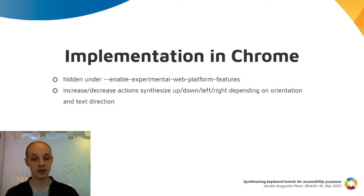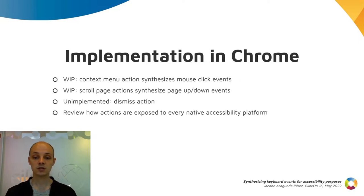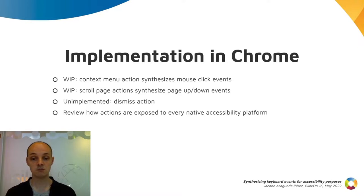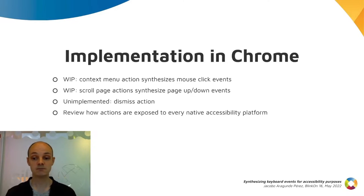This is hidden under a flag. We are currently working on the context menu and scroll page actions to make them synthesize the corresponding mouse or keyboard events. There are more kinds of actions that we haven't implemented in Chrome yet, but we might consider the adoption of actions APIs before going for them. Finally, we are reviewing the different platform accessibility implementations we host in Chrome, checking if we are exposing actions where it makes sense. Otherwise, these features won't be available to AT implementations, and it would be a waste.